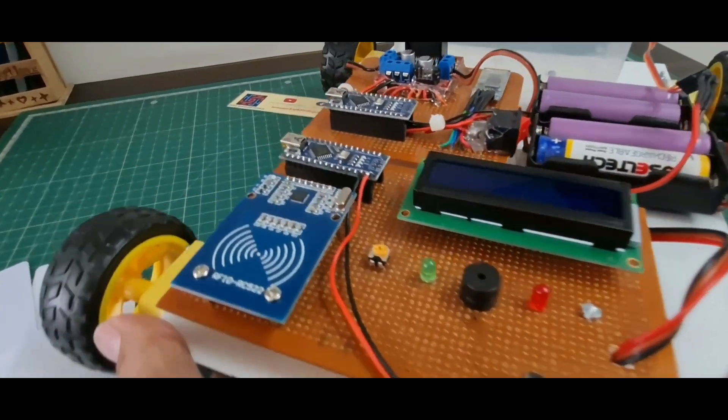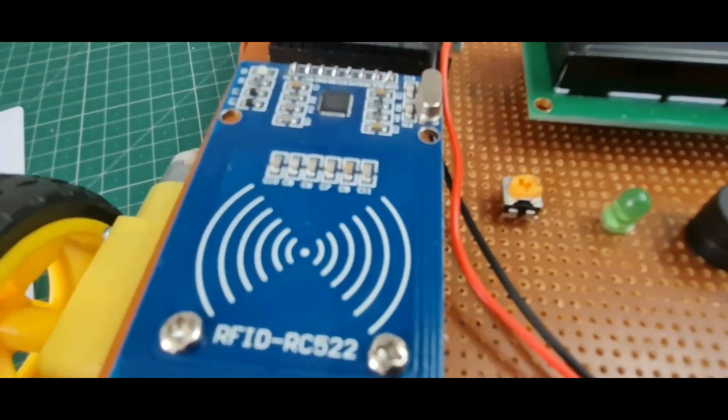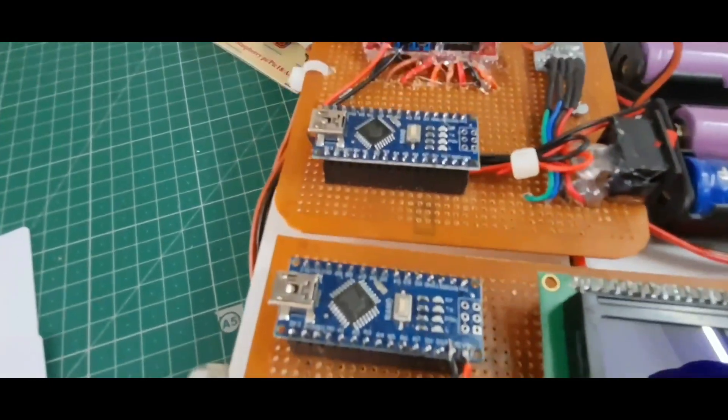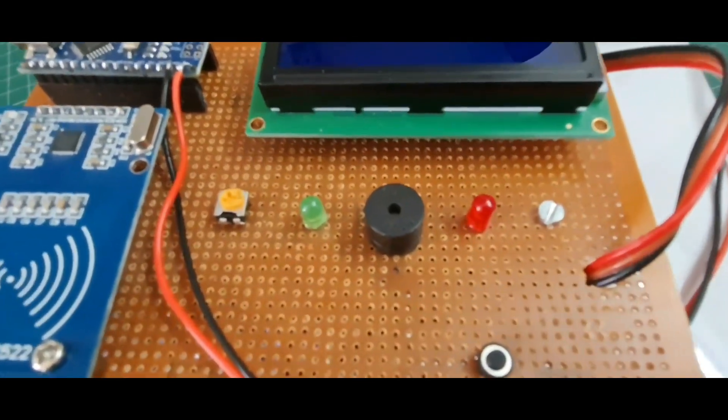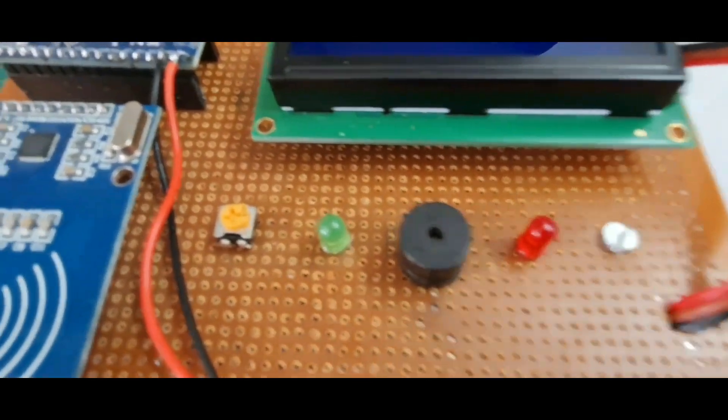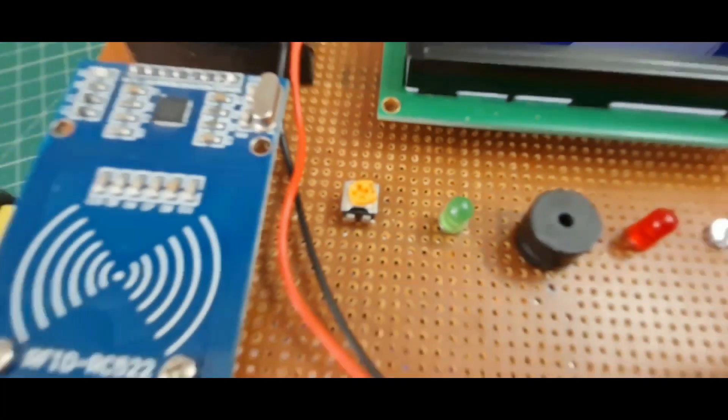I will show which components I use in this project. Here I use the RC522 RFID module, Arduino Nano microcontroller, 16x2 LCD display, two LEDs, one buzzer, and a 10k potentiometer.